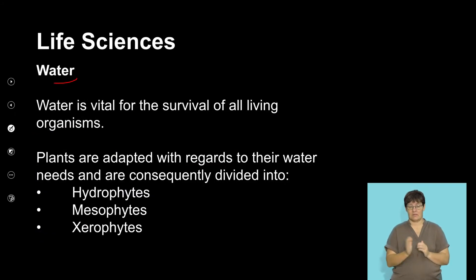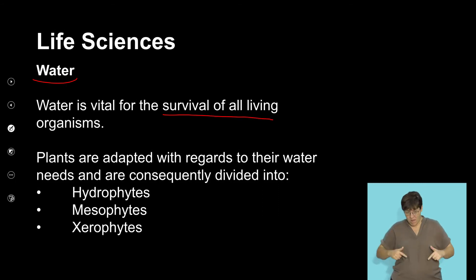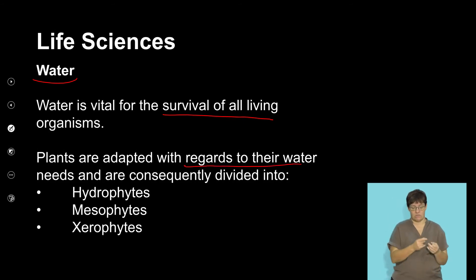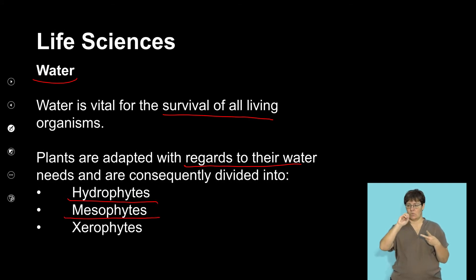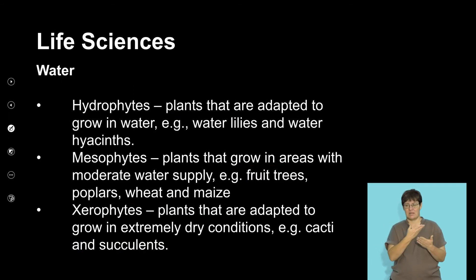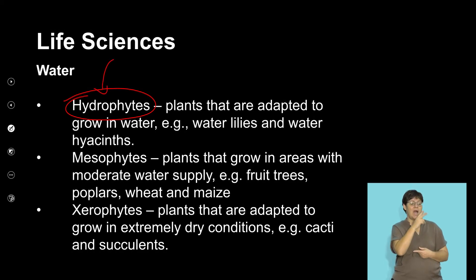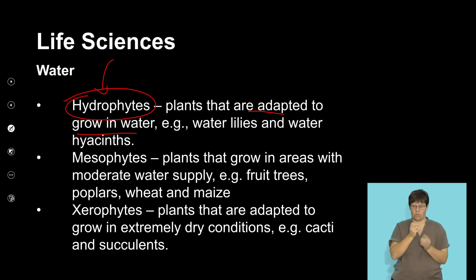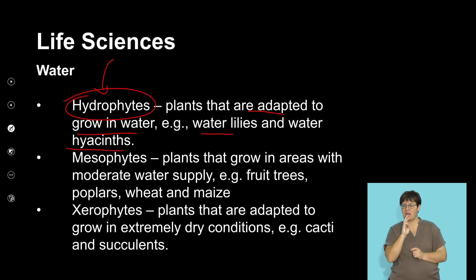The next climatic factor is water — water is vital for all living organisms. Plants are adapted to the availability of water into three groups: hydrophytes, mesophytes, and xerophytes. The word hydro refers to water, so hydrophytes are plants that are adapted to living and growing in abundance of water. Water lilies and water hyacinths are plants that grow predominantly in water.